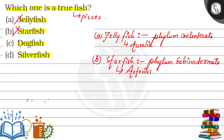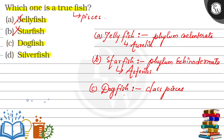What is the third one? Dogfish. Dogfish belongs to class Pisces — this is our true fish! Its actual name is Scoliodon. This one is dogfish.